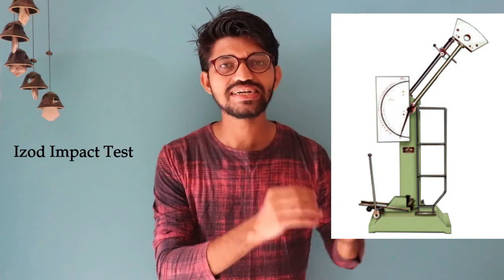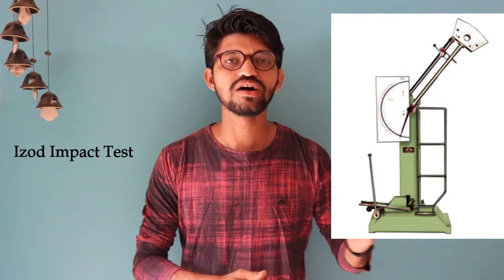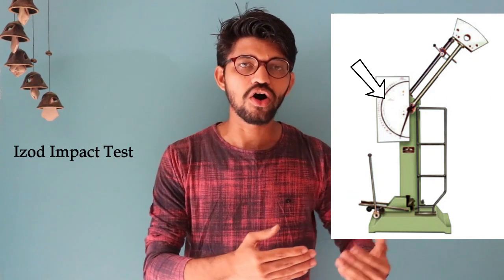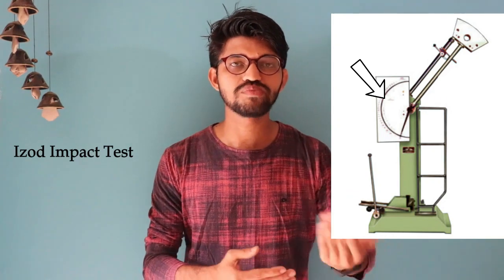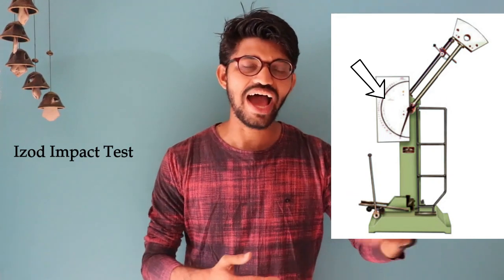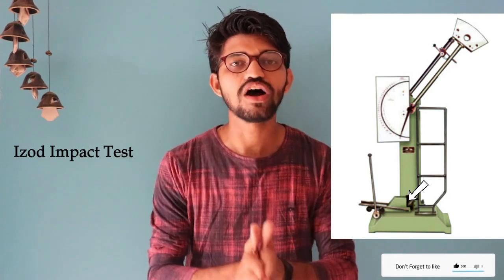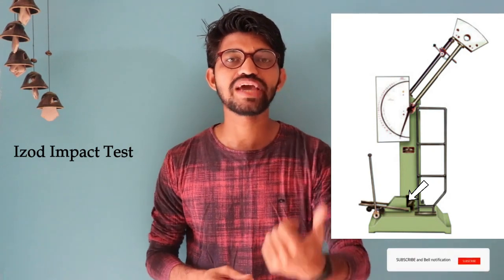Let's take the IZOD Impact Test first. Here you can see the impact testing machine, which has a pendulum type hammer connected to a scale. Just below the hammer there is an anvil, and upon that anvil a specimen will be kept.